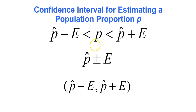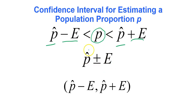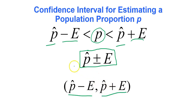To find the final confidence interval: take your sample proportion p-hat and subtract the error to get the lower bound, and add the error to get the upper bound — the true proportion p is sandwiched in between. In inequality form: (p-hat minus E) < P < (p-hat plus E). You can also write it as p-hat ± E, which is plus-or-minus notation, or in interval notation as (p-hat minus E, p-hat plus E).